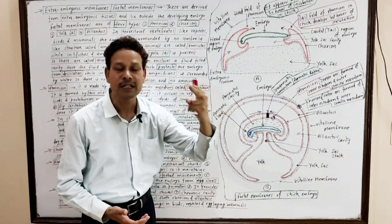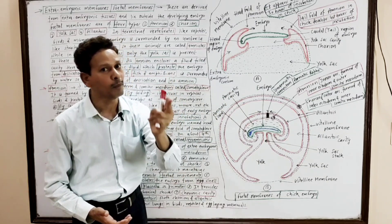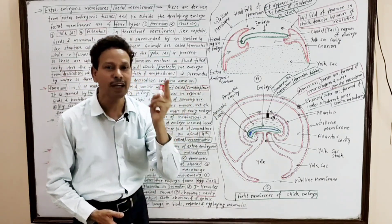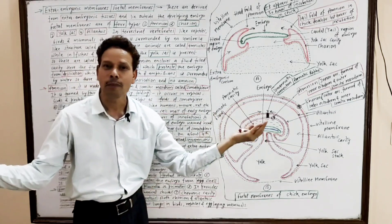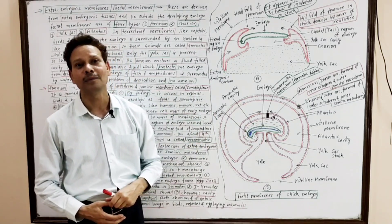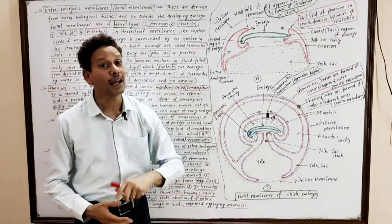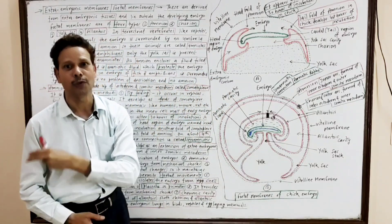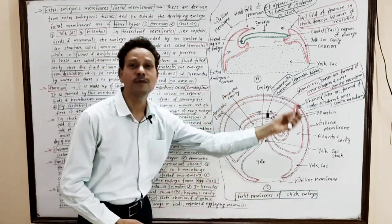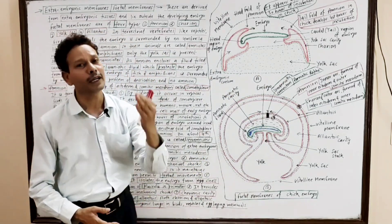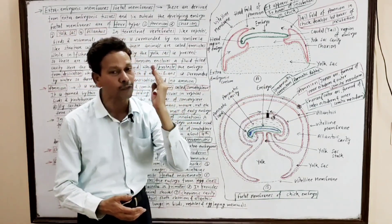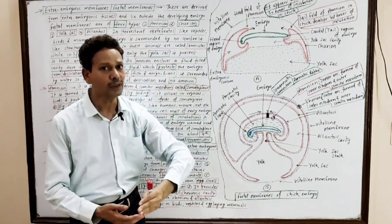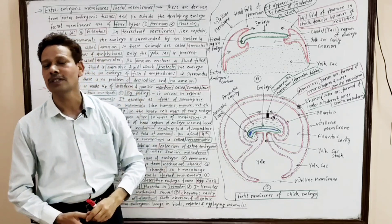In fish and amphibians, since eggs remain surrounded by water, there is no need for the amnion — these are anamniotes. In terrestrial forms, the amnion prevents desiccation, otherwise the embryo would become dry. There are four types of extra-embryonic membranes, also called fetal membranes: amnion, chorion, allantois, and yolk sac.